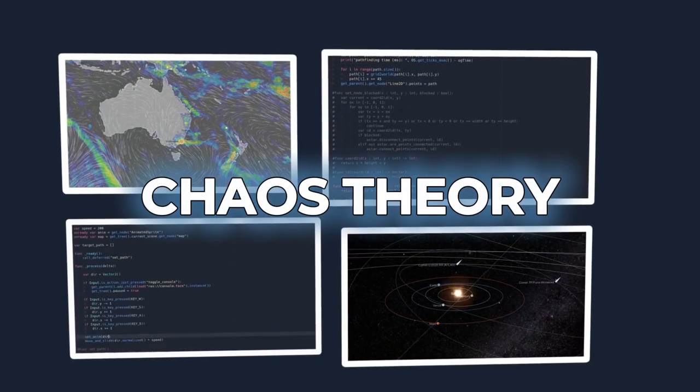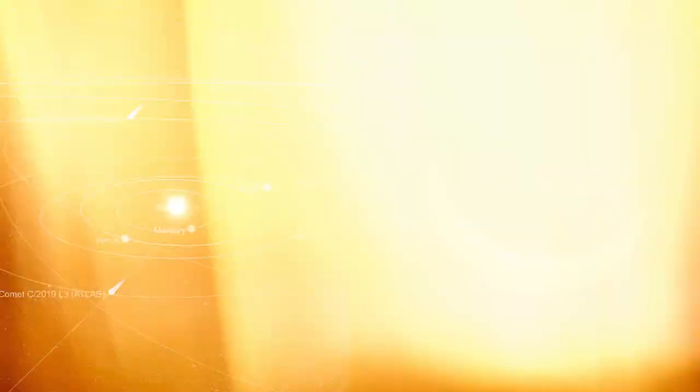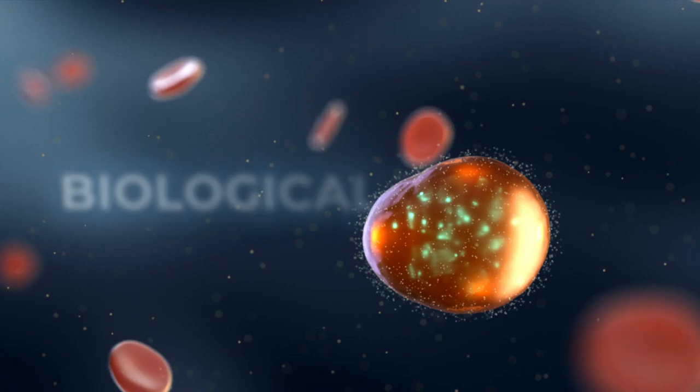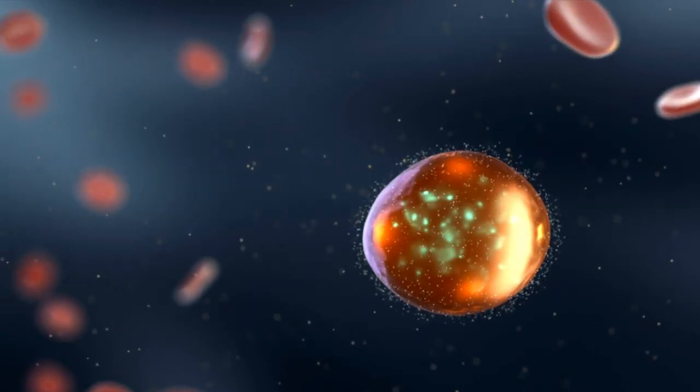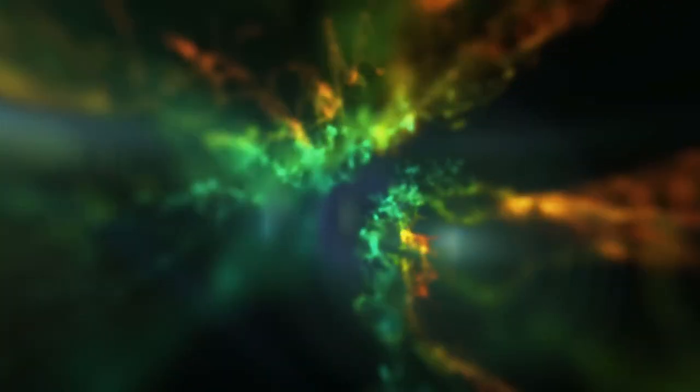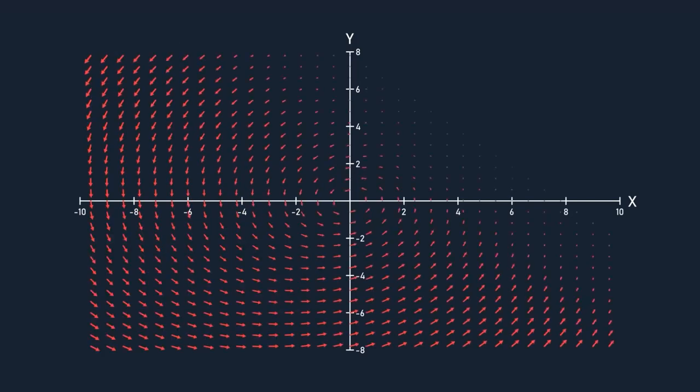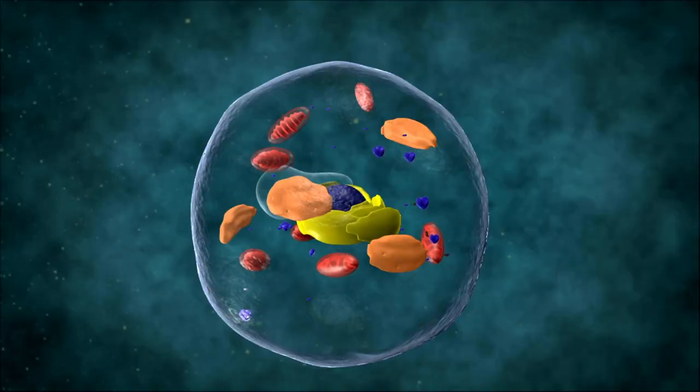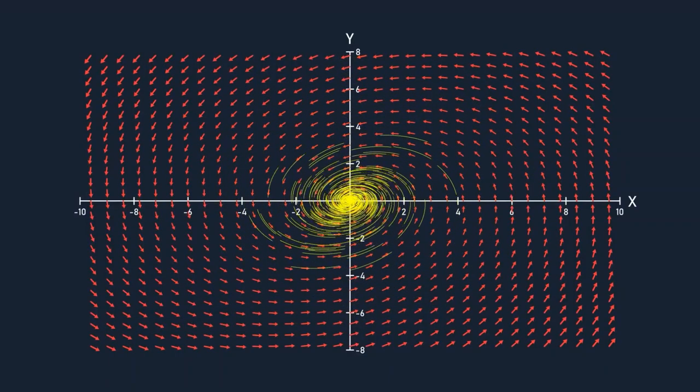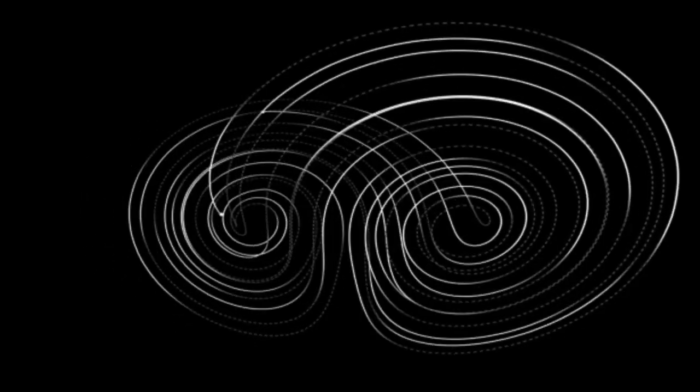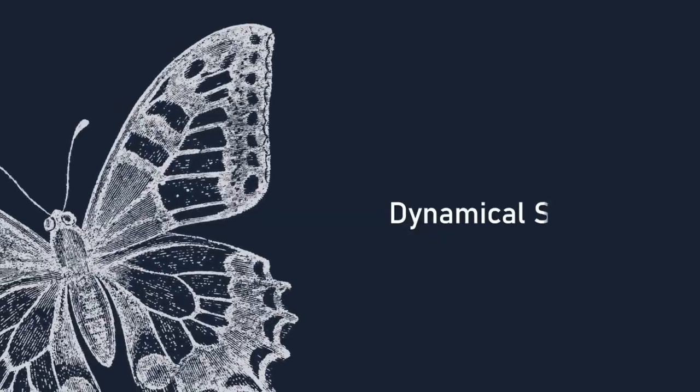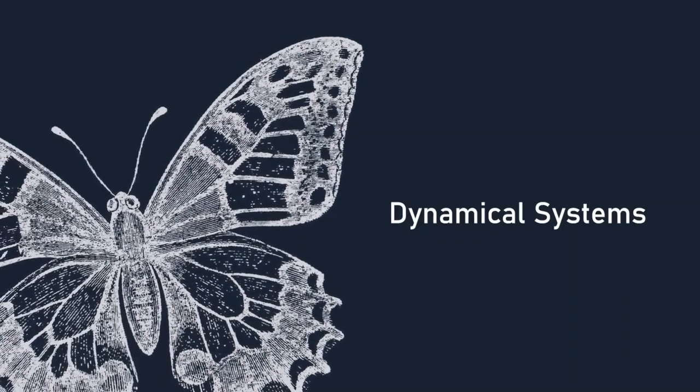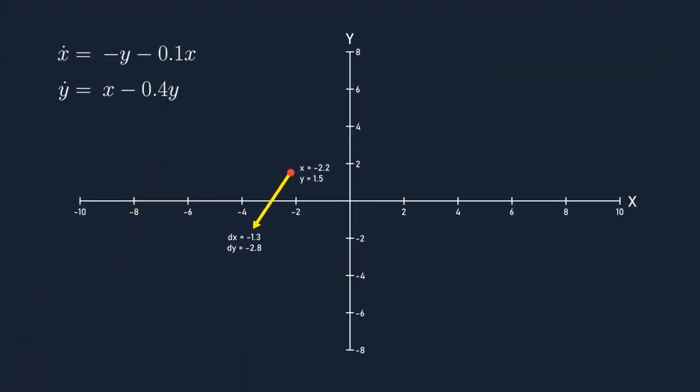Chaos theory illuminates the intricate web of cause and effect that permeates all aspects of existence, from biological organisms to societal structures. By emphasizing the interconnectedness of seemingly disparate events, chaos theory invites us to appreciate the beauty of complexity and the elegance of emergent patterns. Whether observing the growth of a single-celled organism or the evolution of a society, chaos theory highlights the subtle interplay between deterministic processes and dynamic change. It reminds us that even in the most chaotic systems, there exists an underlying order waiting to be unveiled.